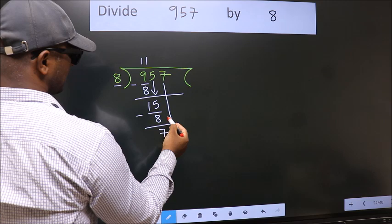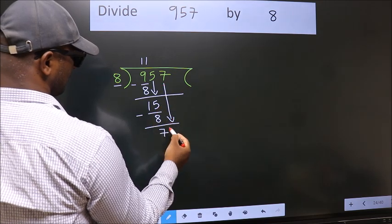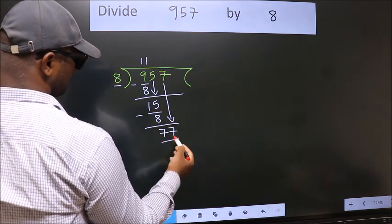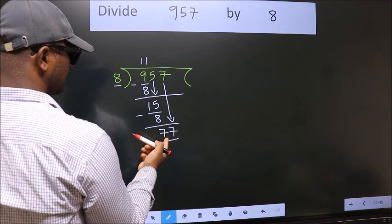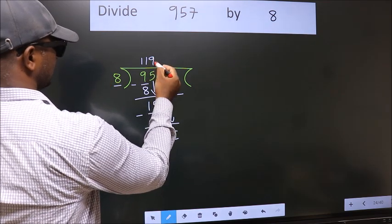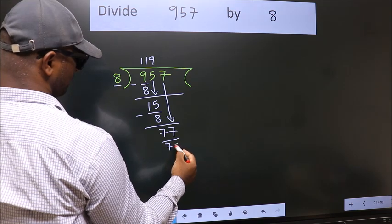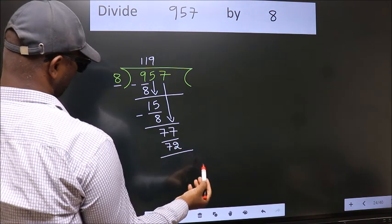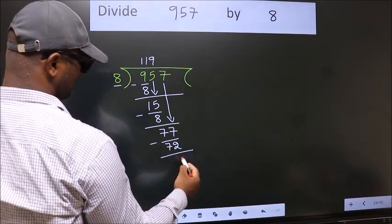After this, bring down the beside number. So 7 down, so 77. A number close to 77 in the 8 table is 8 nines 72. Now we subtract, we get 5.